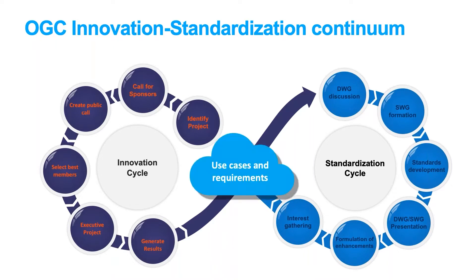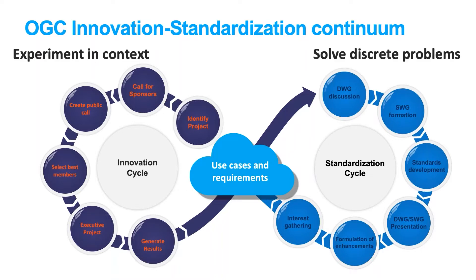Use cases and requirements that are going to drive standards and best practices can intersect both in the right direction and the left direction here in the middle of this cycle. We experiment on these use cases in context and then solve discrete problems. I'm going to approach these from both perspectives — we'll start with experimentation and go to the discrete work.